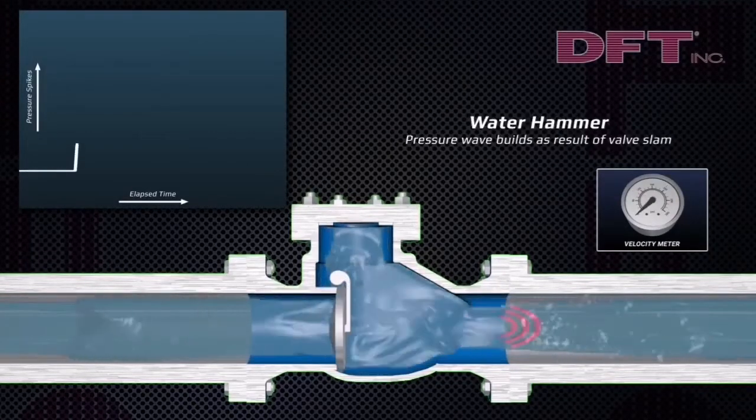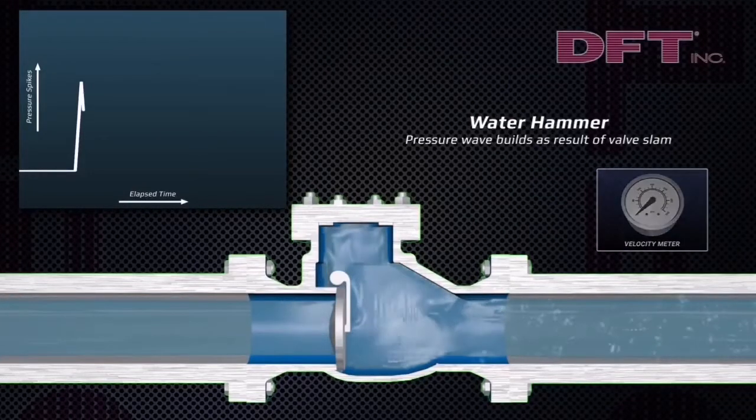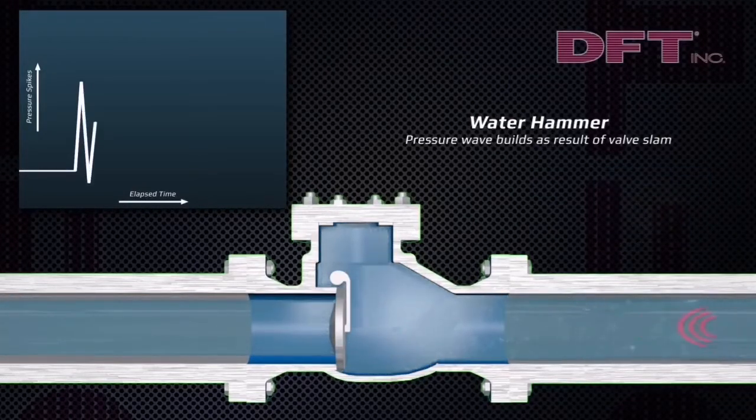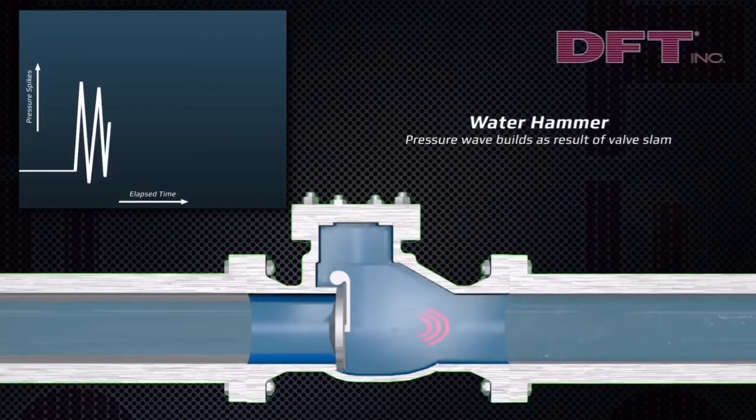When the pump shuts down, it is gravity and reverse flow that closes or slams the swing check valve closed, resulting in pressure wave build and water hammer.